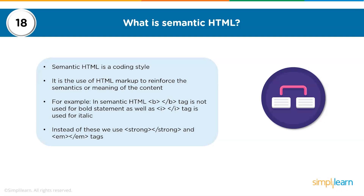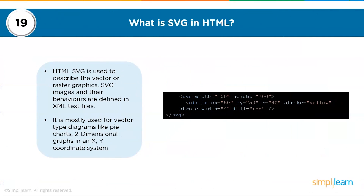The nineteenth question: what is SVG in HTML? HTML SVG is used to describe vector or raster graphics. SVG images and their behaviors are defined in XML text sheets. It is mostly used for vector-type diagrams like pie charts and two-dimensional graphs in an XY coordinate system.